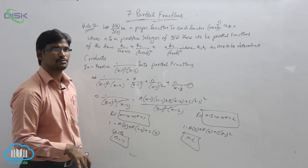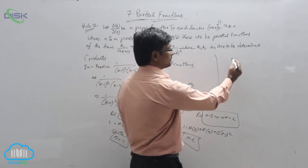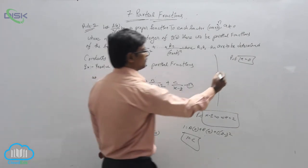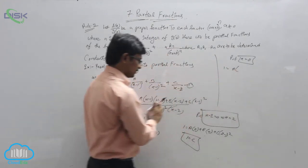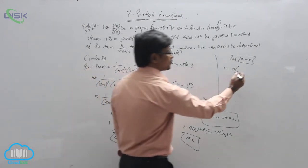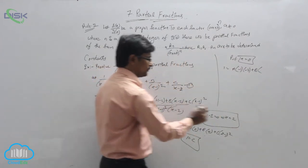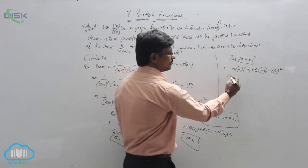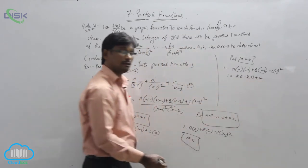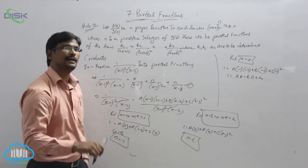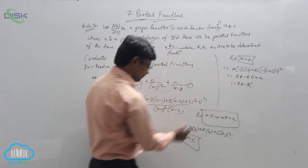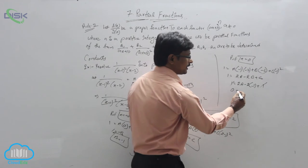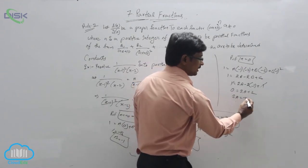To find A, we can substitute any convenient value of x. Let x=0: 1 = A(0-1)(0-2) + B(0-2) + C(0-1)², which gives 1 = 2A - 2B + C. Substituting B = -1 and C = 1: 1 = 2A + 2 + 1, so 0 = 2A + 2, giving 2A = -2 and A = -1.